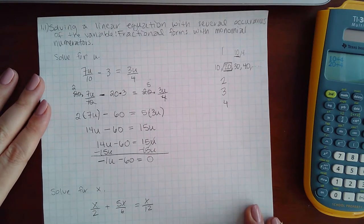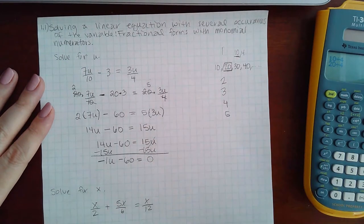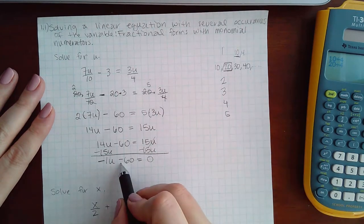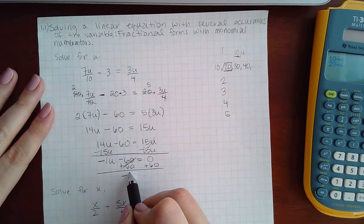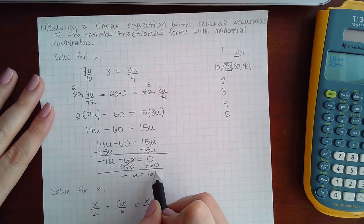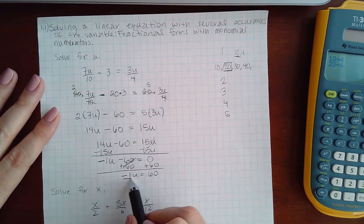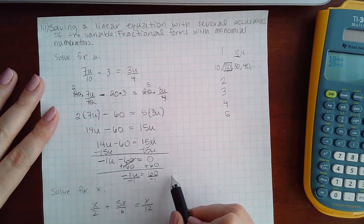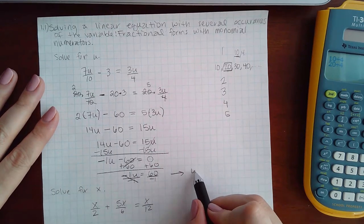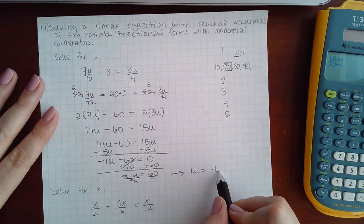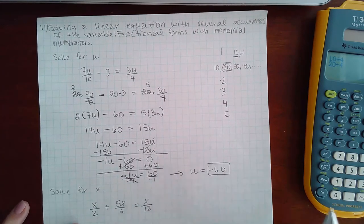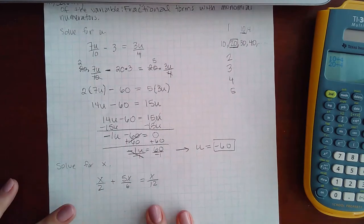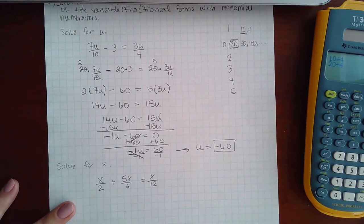Here these cancel, leaving me with 0. 15u minus 15u is 0, so I do need to write that 0 there. Then step 5 is to move the constants to the other side. So I'm gonna add 60 to both sides. I get negative 1u equal to positive 60. And then the last step is to divide by that coefficient. So the negative ones cancel, and I get u by itself equal to negative 60. And that is the end of that problem.